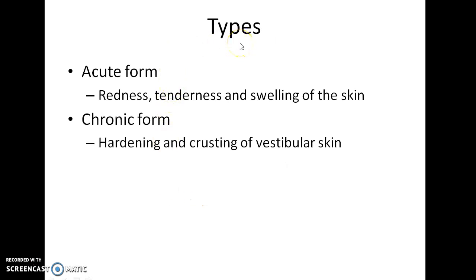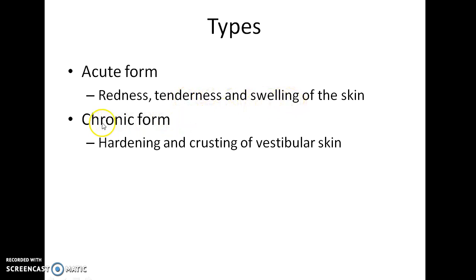What are the types of nasal vestibulitis? There are two forms: acute form and chronic form. In the acute form there is redness, tenderness, and swelling of the skin. In the chronic form there can be hardening and crusting of vestibular skin.